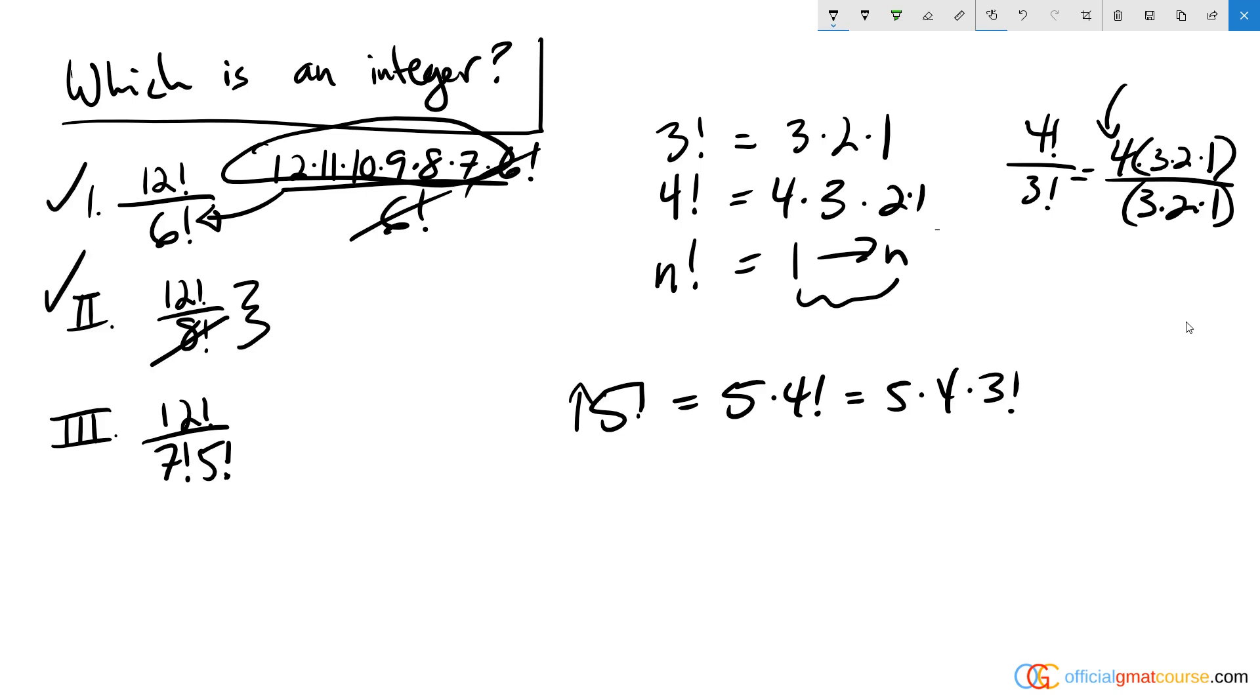And this final one, 12 factorial over 7 factorial times 5 factorial - well this is actually a mathematical principle as well. If you think about it for a couple of minutes you might be able to resolve this on your own. This is also something that we see in combinatorics where the bottom two numbers add up to the top number, and anytime you have this situation with factorials they're going to cancel out to a whole number on top.